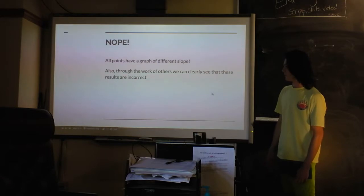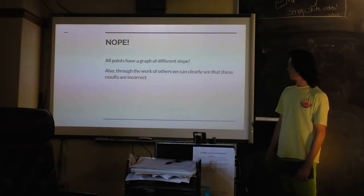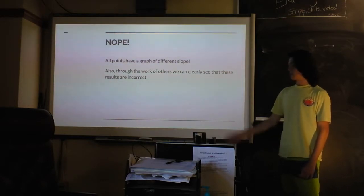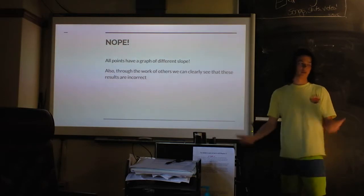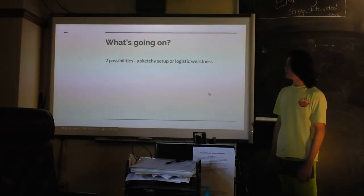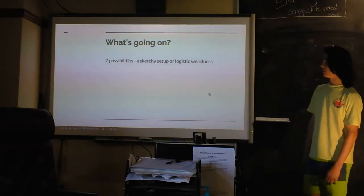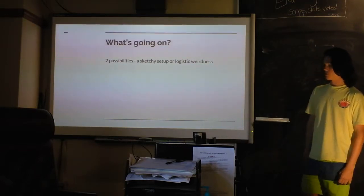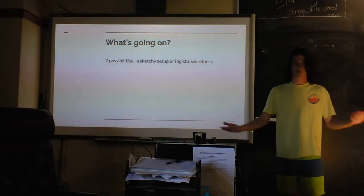So it's clearly not linear. All points have a graph of a different slope. And you can, you know, but you can clearly see that that's incorrect. So we know that that was incorrect. My lab was basically failure. But that allows me to discuss failure.